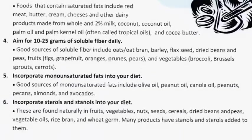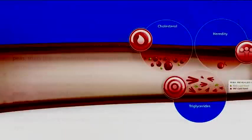And last: Incorporate sterols and stanols into your diet. Sterols and stanols are found naturally in fruits, vegetables, nuts, seeds, cereals, dried beans and peas, rice bran, and wheat germ. Many products, such as some margarines, have stanols and sterols added to them.